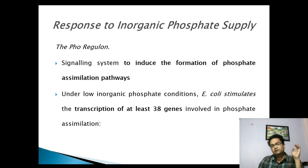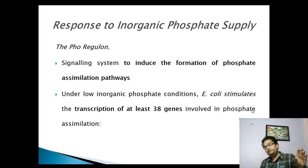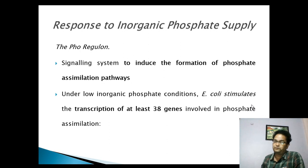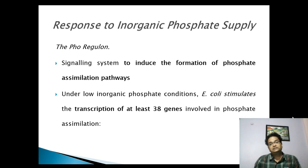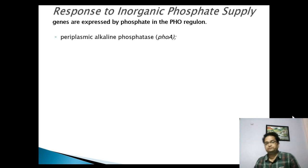Some of the proteins form components of porin channels, which are present in the outer membrane of E. coli. Some proteins are present in the periplasmic space where they can bind to inorganic phosphate, and some proteins form channels in the cell membrane through which inorganic phosphate can enter into the cytoplasm. Besides that, certain proteins are involved in regulation, as well as converting organic phosphate into inorganic phosphate. These are some of the genes expressed by the PHO regulon.